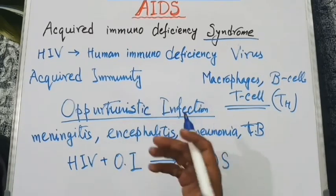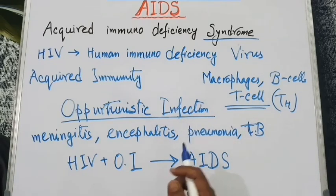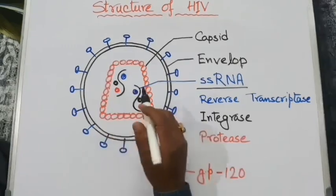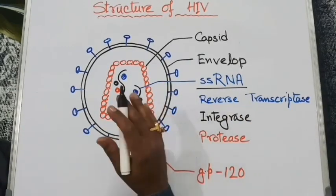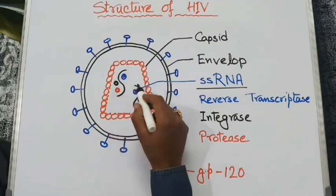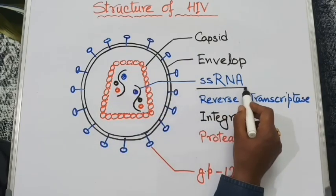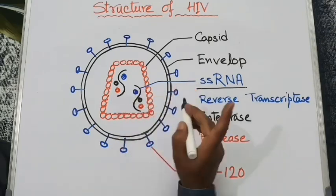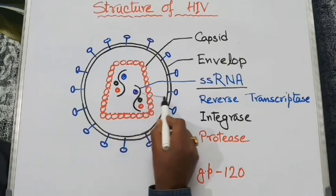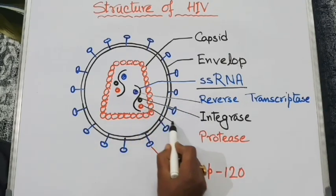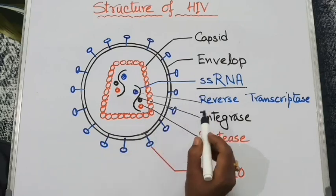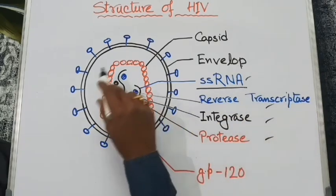Now let's discuss the structural details of HIV virus. HIV virus is a retrovirus, which means its genetic component is RNA, not DNA. It contains two identical sets of single-stranded RNA, not double-stranded RNA. The virus also contains certain specific enzymes: reverse transcriptase, integrase, and protease. Only these three types of enzymes are present inside this virus.